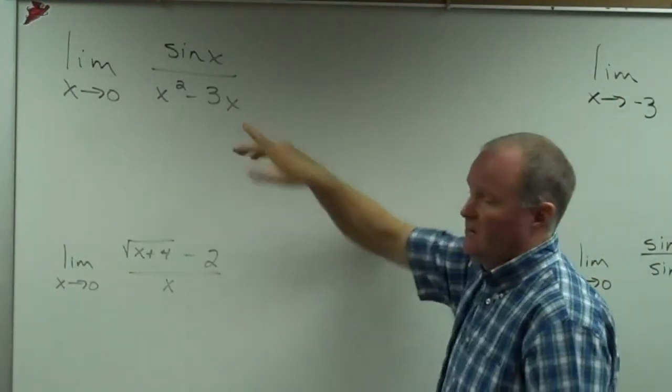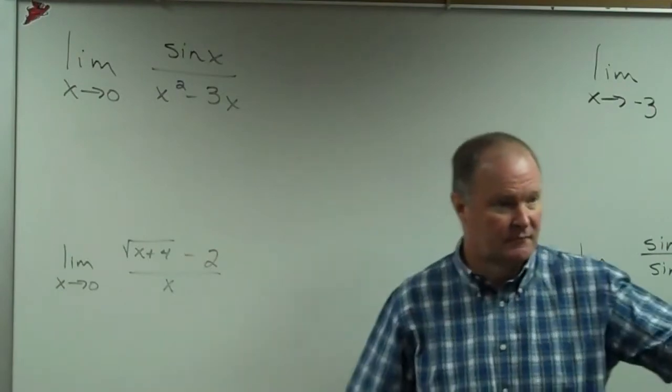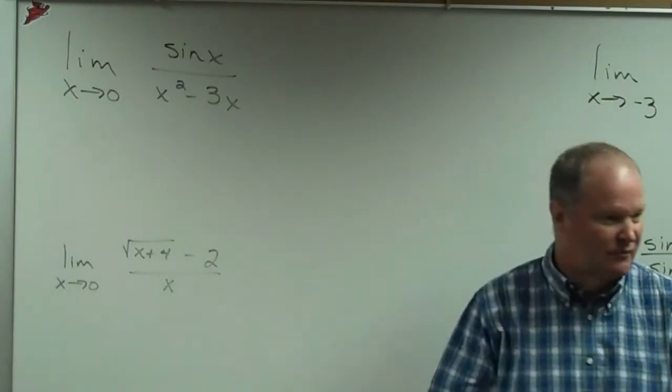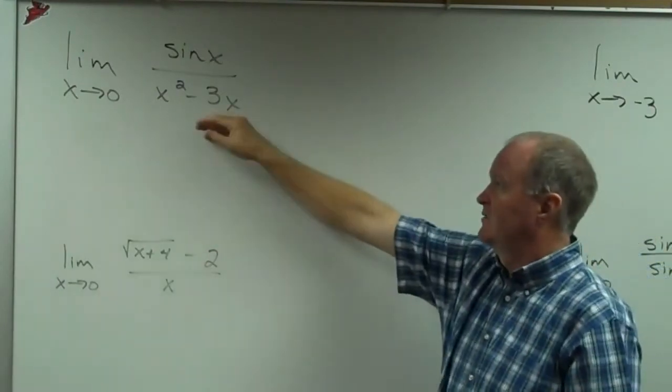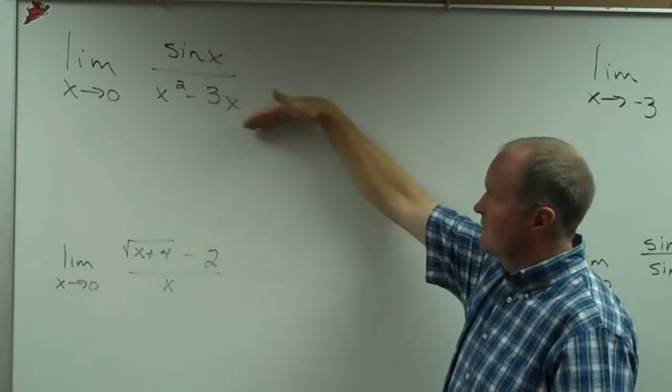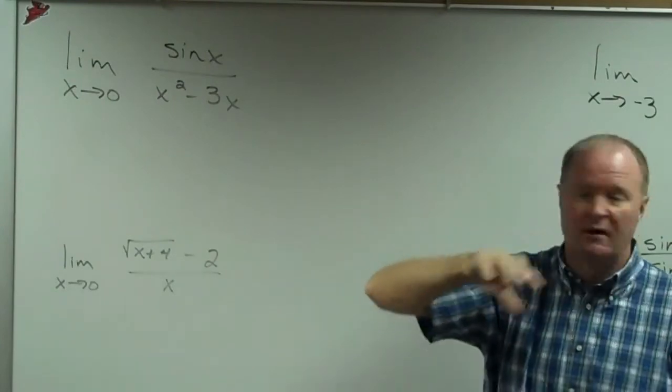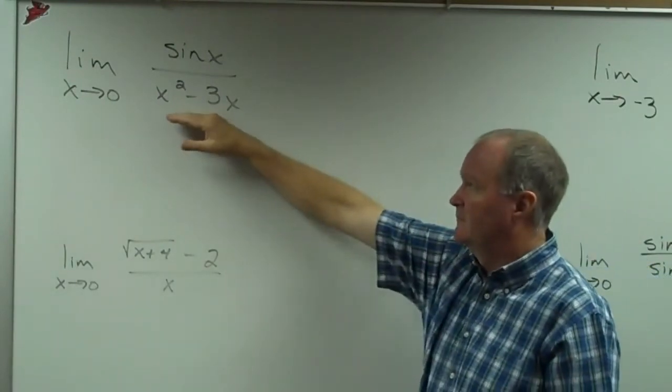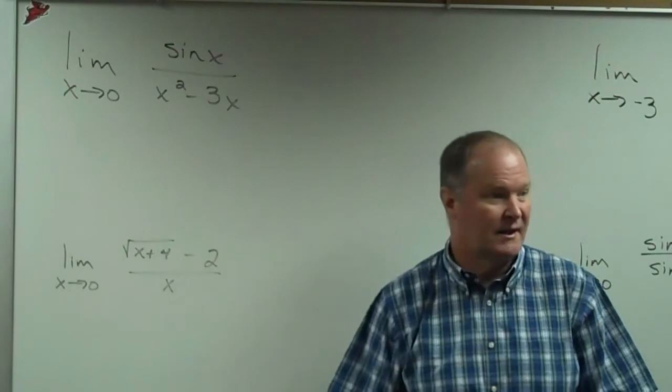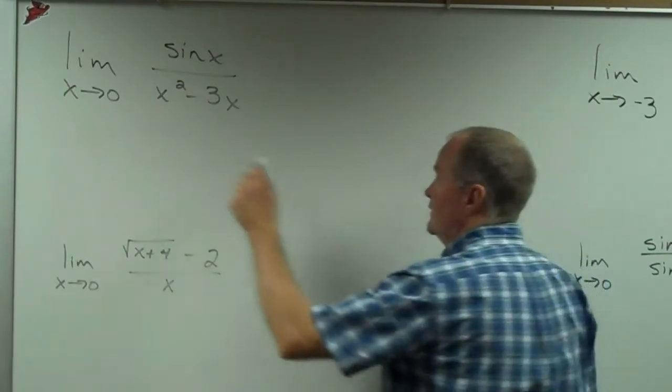So this one, if I plug in and I got zero minus zero, bad. Do the math. Nothing really to do the math. Factor. It's got a trig in it. So I'm thinking I got to probably get a sine x over an x somewhere as well. But if I look at the bottom, they both have an x in common. So I'll go mess with this.